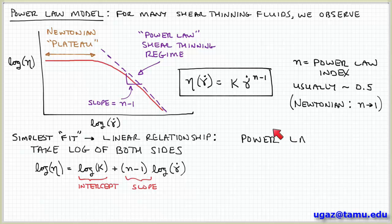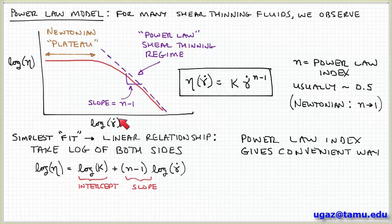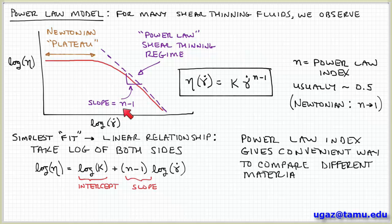Now why do I call this n minus 1? Well, this power law index is defined so that it's a positive number. That's basically the reason. Because you can see there's a decreasing function. So the slope is negative. n minus 1 is negative. So we define it in this way so that this value n gives us a positive number. That's why we choose n minus 1 for the slope instead of n.